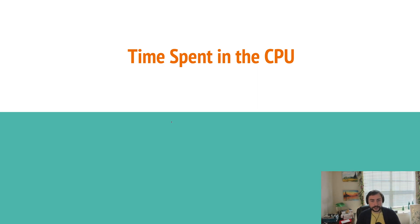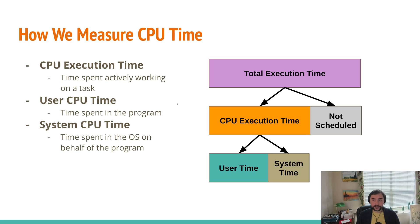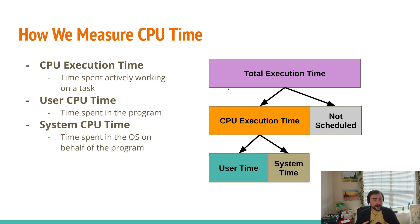Speaking about execution time, we should talk about our time spent in the CPU. At the very top, we have our total execution time, sometimes referred to as our wall clock time — the time from when we start our application until it finishes. However, our CPU might not actually be working on our application for this entire duration. There might be time our CPU is actively working on our program, and other times where our program simply isn't scheduled. Our CPUs are often working on a number of different things, scheduling between different tasks.